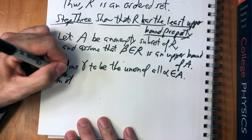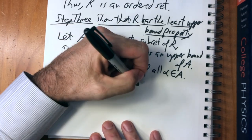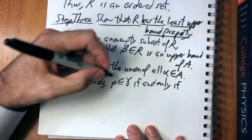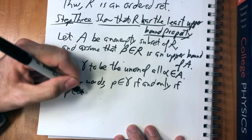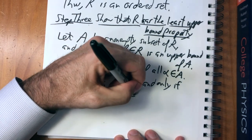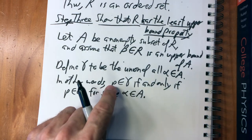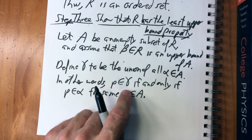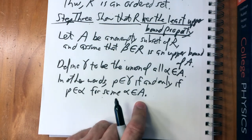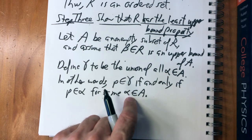We shall prove two things: first, that gamma is an element of the real numbers — that gamma itself is one of these cuts — and second, that gamma is the supremum of A. That's what the least upper bound property requires: for any bounded set of elements in R, it has a supremum. We're going to construct that supremum and show gamma is it.